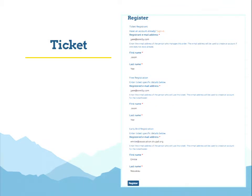On the front end, we patterned things after Eventbrite, which makes the flow really simple for the end user. From the event page, they simply select the quantity and type of tickets they want. That takes them to the registration page, where they fill out information for each ticket type. At the top are fields for the person who's registering, so someone can register for other users and be able to associate tickets to the actual attendee while retaining the ability to go back and make modifications.